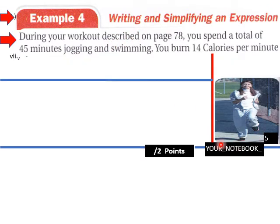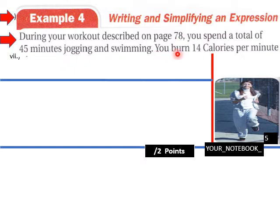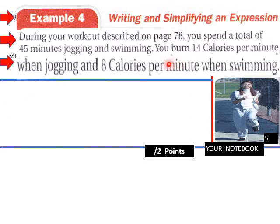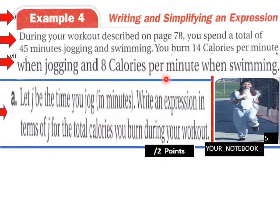Let's go to Example 4, page 5 in your notebook. This goes into your notebook, students. During your workout described on page 78, which we went into earlier in the classwork, you spend a total of 45 minutes jogging and swimming. You burn 14 calories per minute when jogging and 8 calories per minute when swimming.